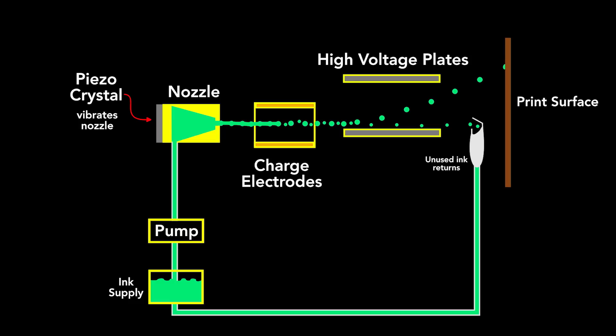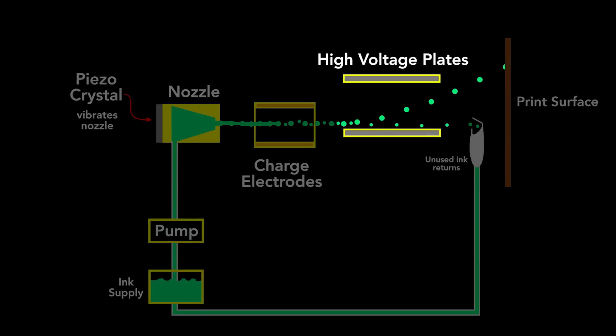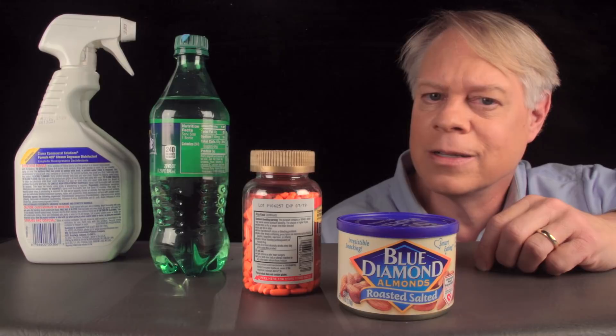The drops stop and start as needed. And to create the letters, some printers move the nozzle, others change the voltage to redirect the stream, and some printers have multiple nozzles.